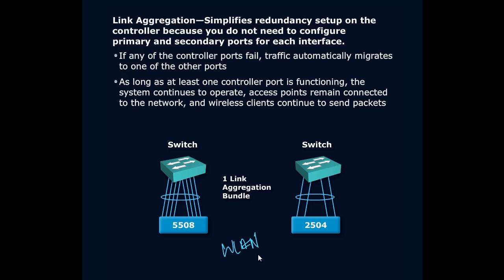And because we have configured LAG, any configuration for a secondary port is completely deleted. When we do link aggregation within our wireless LAN controller, we're left with one port. So any wireless LAN that is on untagged is deleted, and anything on other wireless LANs is disabled until you remap them. It's a great thing — just know the consequences if you enable link aggregation. Not that big a deal; you just go back and remap everything.